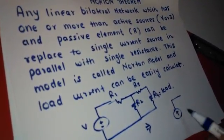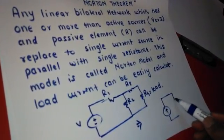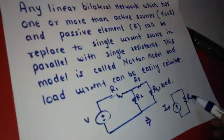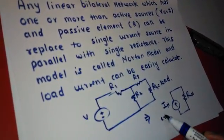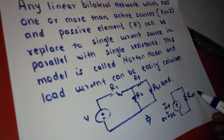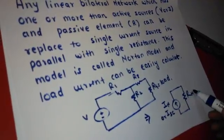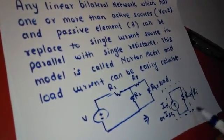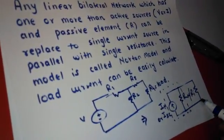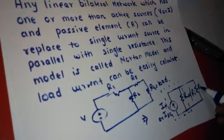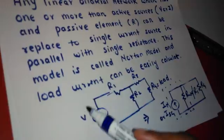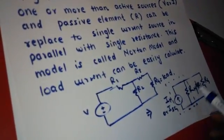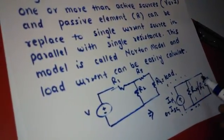That single current source is in parallel with a resistance element. This is called Norton current, or we can say short circuit current, and RN is the internal resistance. This model is called the Norton model. Now we can connect the load in parallel to this model, and that load is R4. So from this, the fairly complicated circuit which has more resistances or maybe one or more voltage or current sources, we can convert into a reduced simple Norton model.